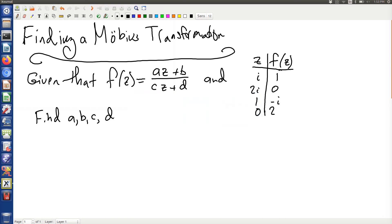This video shows you how to find the coefficients of a Möbius transformation, given some information. A Möbius transformation is a function like what I've shown on the screen here, and here are four different points in the complex plane and their images through the transformation. Our goal is to find complex numbers A, B, C, and D that make this happen.